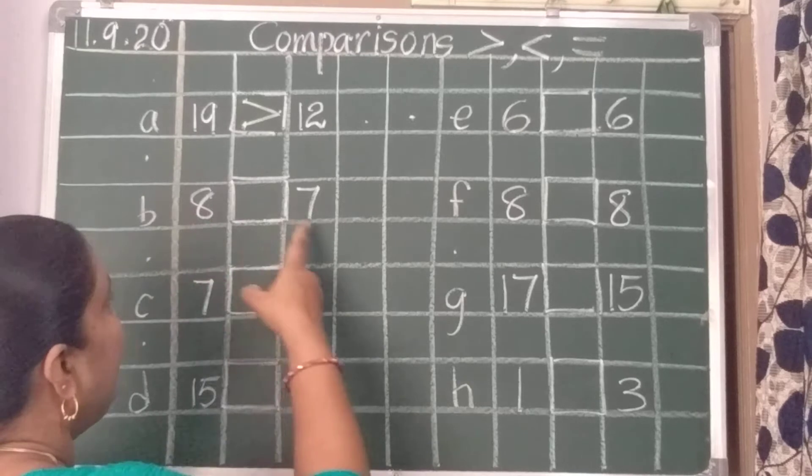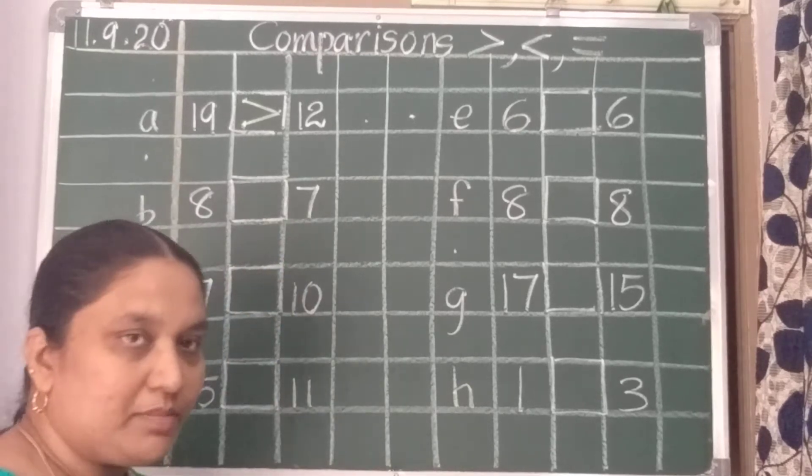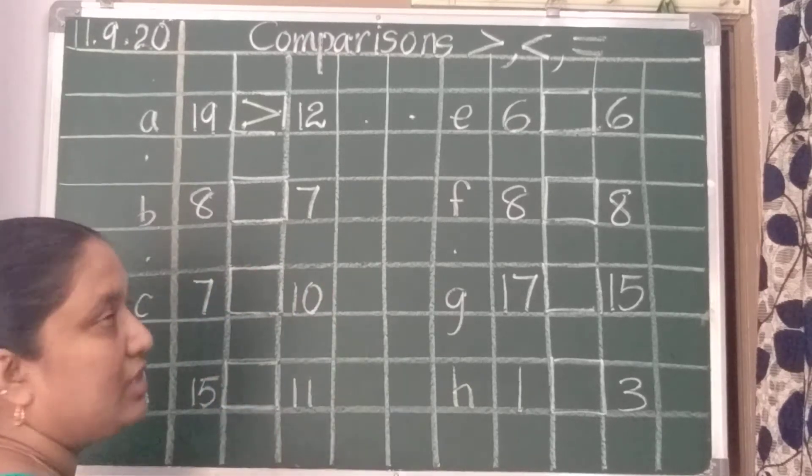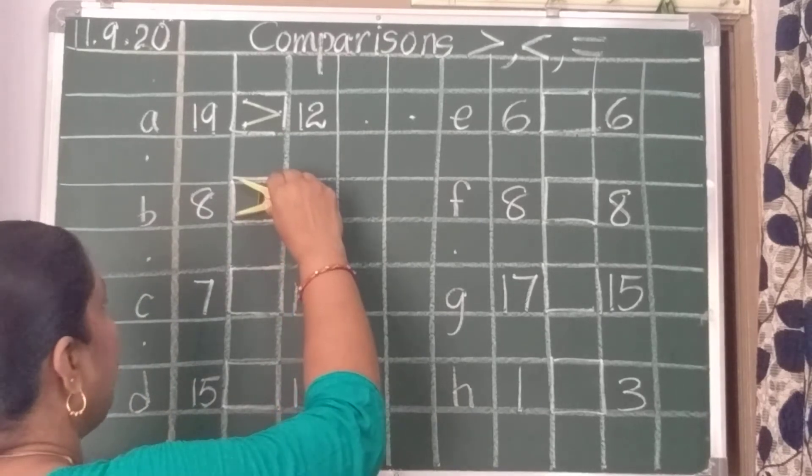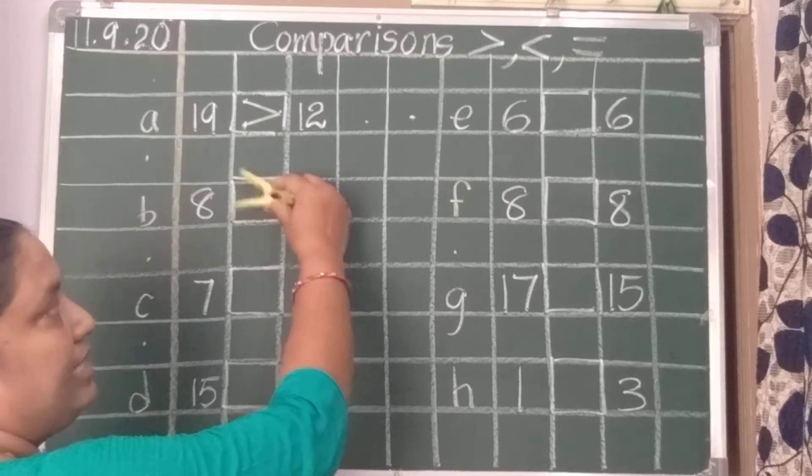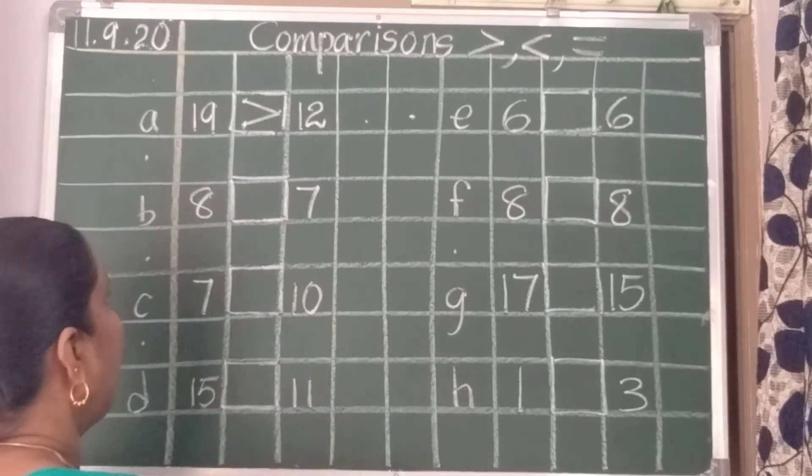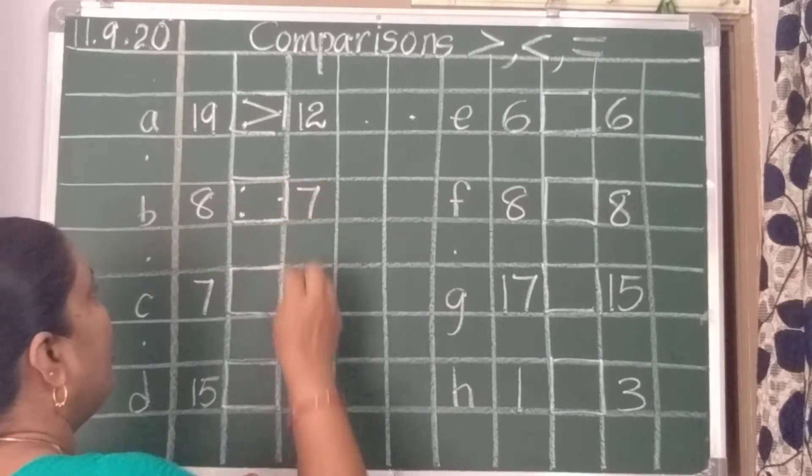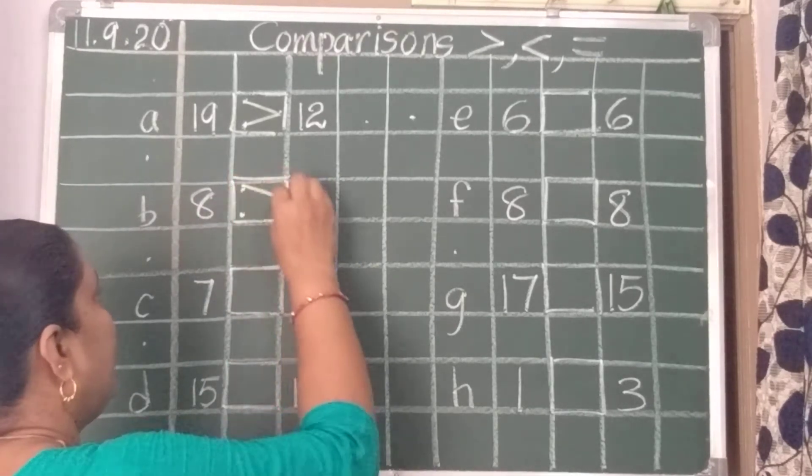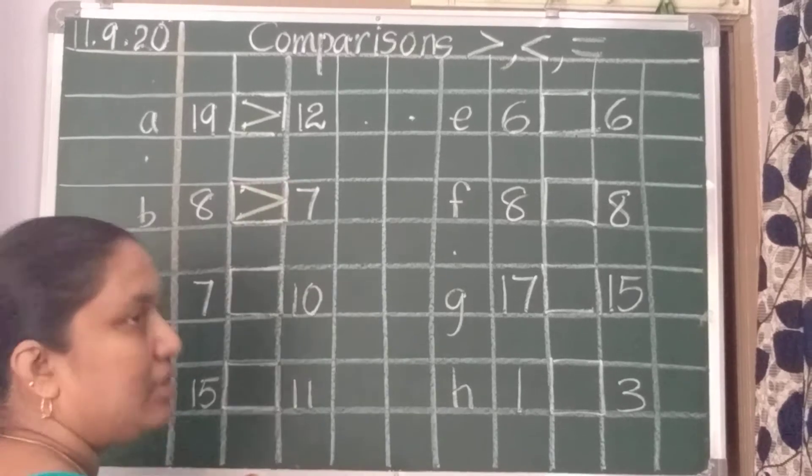Next, 8 and 7. Which is the bigger number? 8 or 7? 8. So again, the crocodile mouth will be open to which side? To the 8 side. Again, two dots here, to the 8 side, in the middle of this box, one dot. Now, join the dots like this.